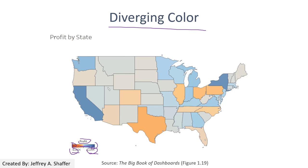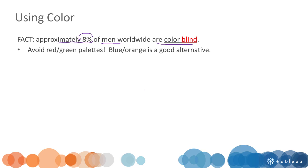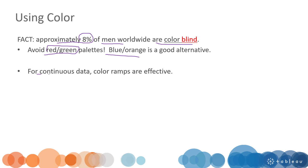Those are the different color schemas. Here are some tips to keep in mind when using colors. About 8 to 10 percent of men are colorblind, so try to avoid using red and green. Blue and orange is a good alternative. For continuous data, sequential or diverging color schemas are more effective.